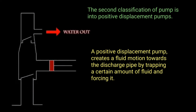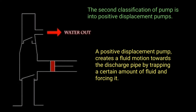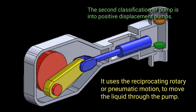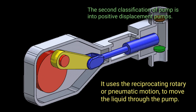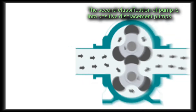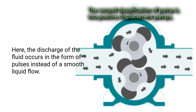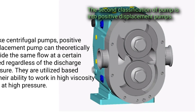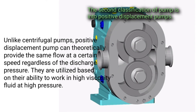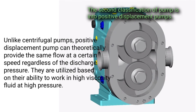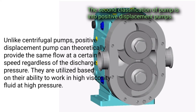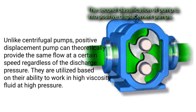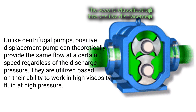The second classification of pumps is positive displacement pumps. A positive displacement pump creates fluid motion towards the discharge pipe by trapping a certain amount of fluid and forcing it out. It uses reciprocating, rotary, or pneumatic motion to move the liquid through the pump. The discharge of fluid occurs in the form of pulses instead of a smooth flow. Unlike centrifugal pumps, positive displacement pumps can theoretically provide the same flow at a given speed regardless of discharge pressure, and are utilized for high viscosity fluids at high pressure.